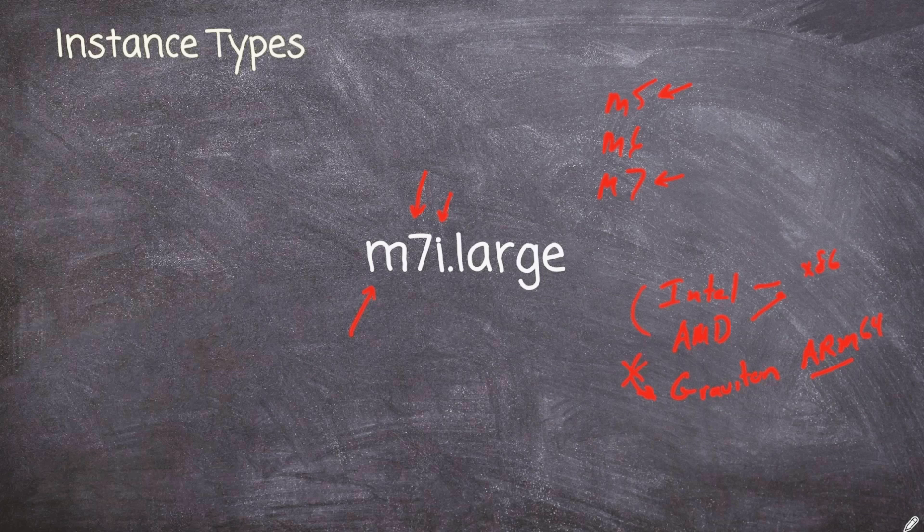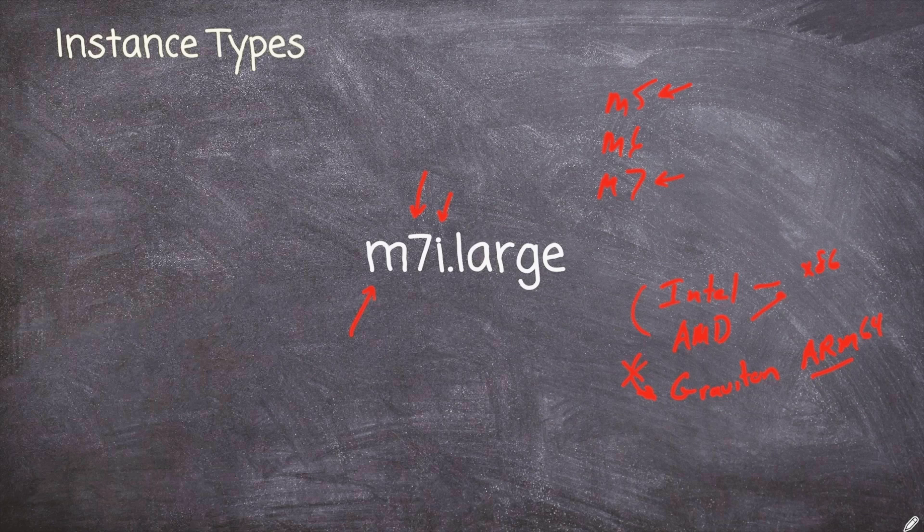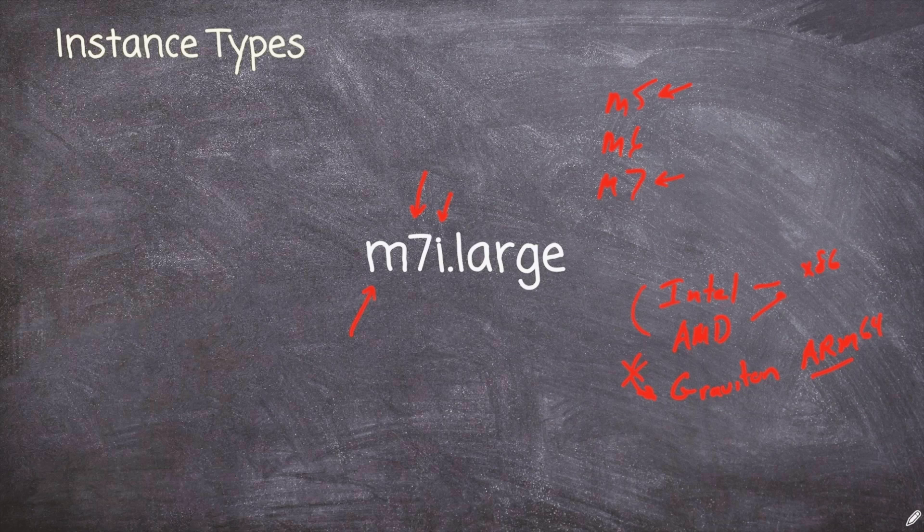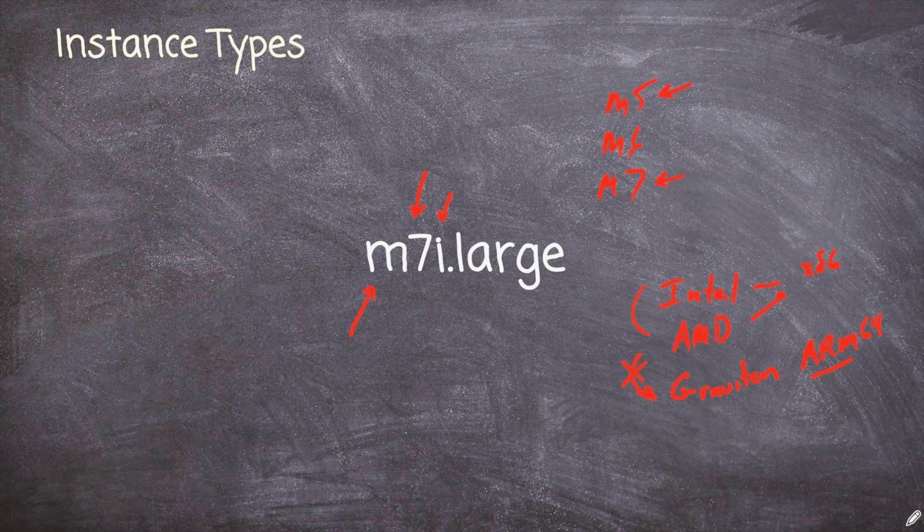Now, why in the world would you want to run on a Graviton processor? Well, cost. Because AWS invented this Graviton processor themselves, they're not having to pay royalties or licensing fees or purchases to Intel and AMD for running their processors. So they can offer these Graviton-based instances for a lower cost. Okay, so continuing on, we have this large part here.